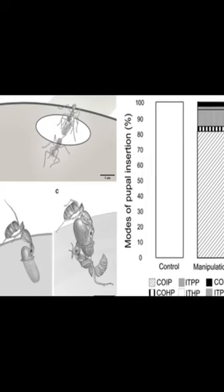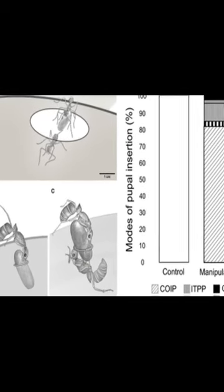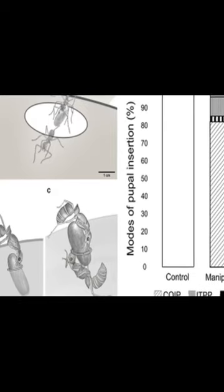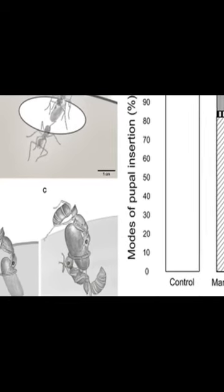This paper explores how Ponerine ants, a type of solitary forager, can overcome a challenge posed by restricting access to their pupae.